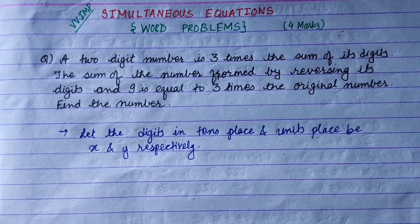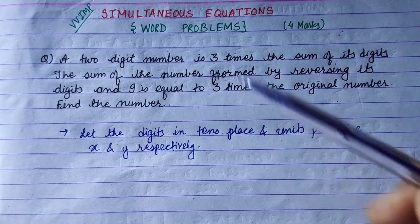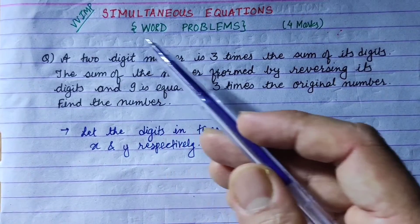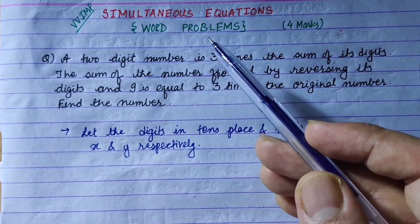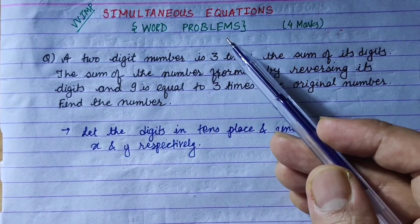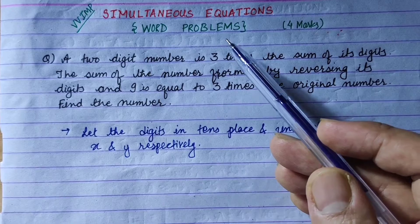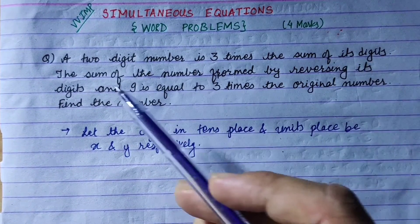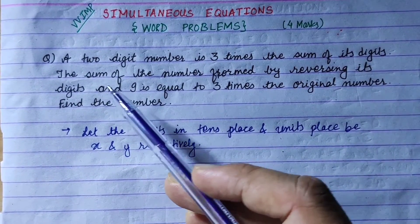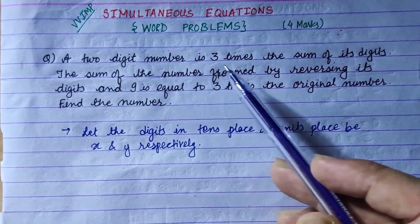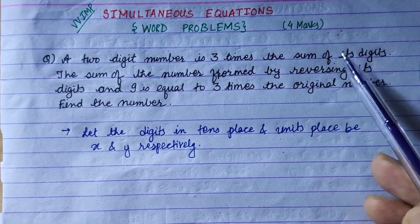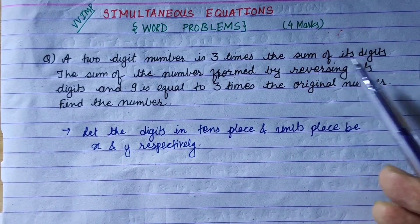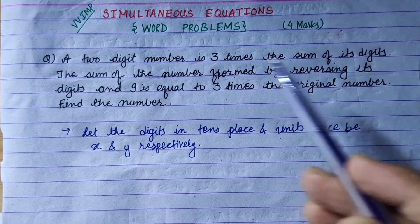Hi everyone. Today we have a very important word problem. This is an example worth four marks. The two-digit number is 3 times the sum of the digits.